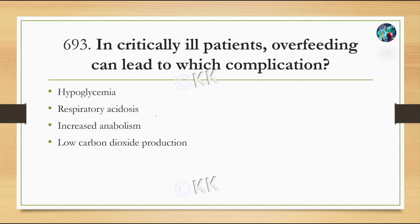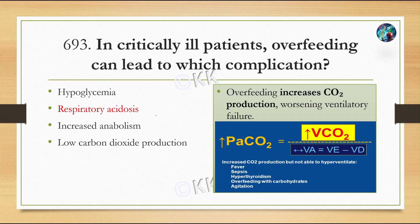Next question. In critically ill patients, overfeeding can lead to which complication? Option A: hypoglycemia. Option B: respiratory acidosis. Option C: increased anabolism. Option D: low carbon dioxide production.